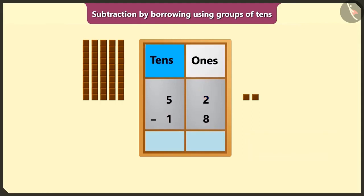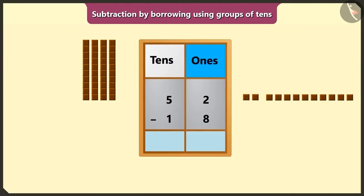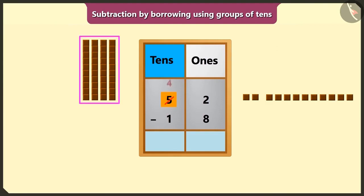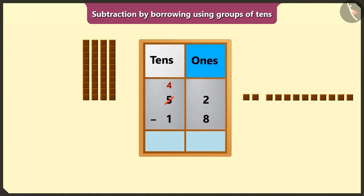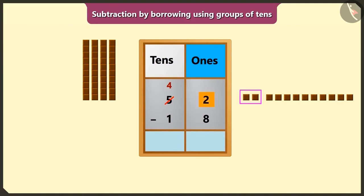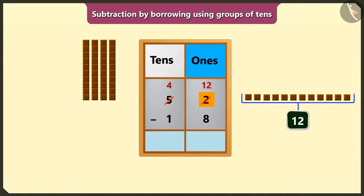Here we will borrow 1 ten from the number 5 of the box of tens. It means the number in the place of ones can borrow from its neighbour number in the box of tens. So, borrowing 1 ten from the 5 tens means subtracting 1 ten from 5 tens, which makes it 4 tens. So here, 1 ten will be less in the place of tens. Now, in the box of ones, 1 borrowed ten equals 10 ones. Now it will be 2 ones plus 10 ones, meaning 12 ones in the box of ones.